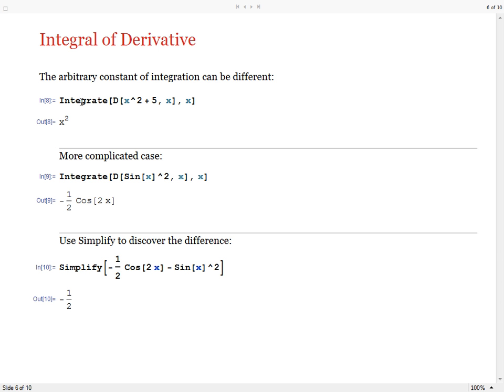If you take an indefinite integral with respect to x of a derivative with respect to x, then the result can differ from the input expression by an arbitrary constant, in this case the constant 5. This is a consequence of the fact that indefinite integrals include an arbitrary constant of integration.